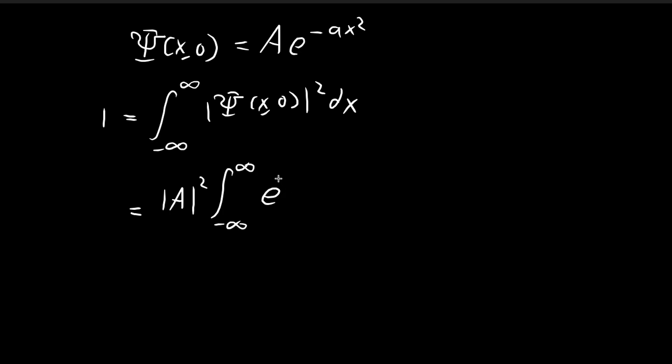And then for this e term here, it becomes negative 2ax squared dx. Now our challenge is to solve this integral. This integral is actually going to be equal to the square root of π over 2a.